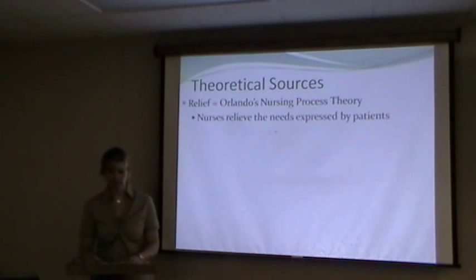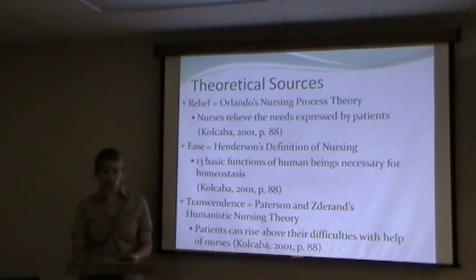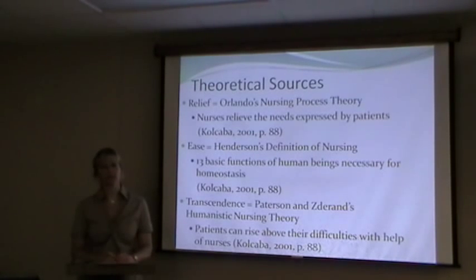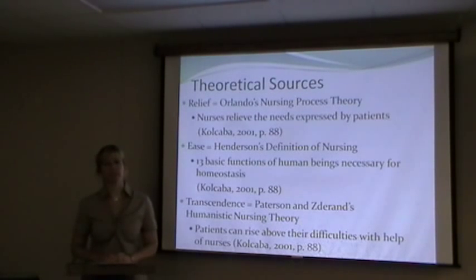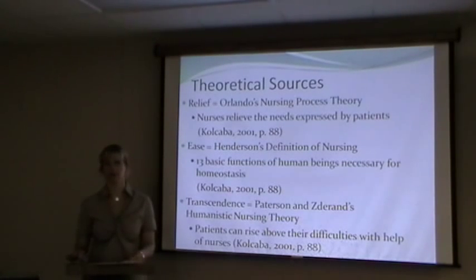Some theoretical sources used in developing her taxonomic structure were: for relief, she used Orlando's nursing process theory, which stated that nurses relieve the needs expressed by their patients. For ease, she used Henderson's definition of nursing, which stated that the 13 basic functions of human beings are necessary for homeostasis. For transcendence, she used Patterson and Zarin's humanistic nursing theory, which stated that patients can rise above their difficulties with the help of their nurses.